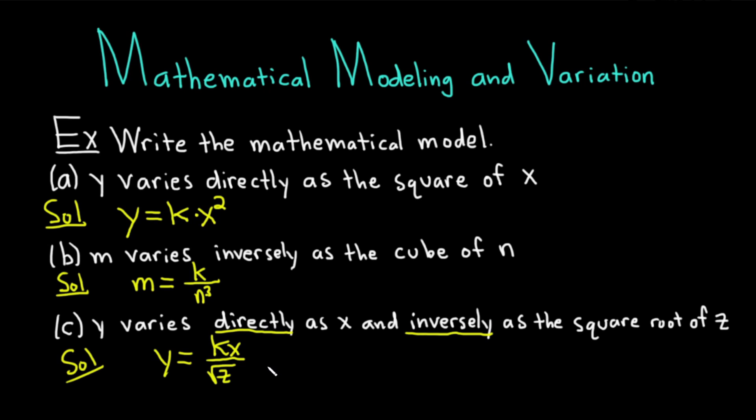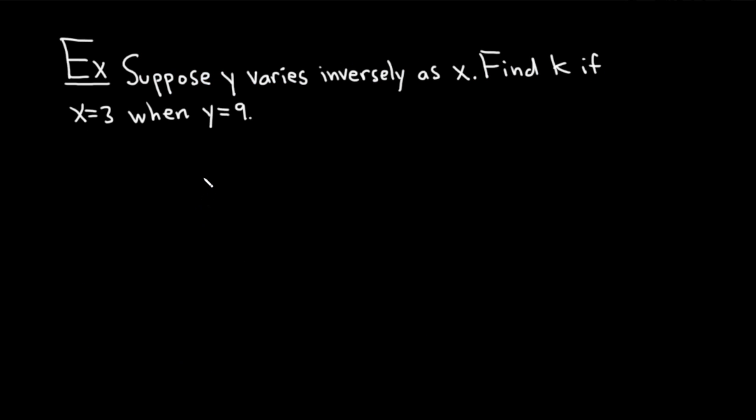Let's do another example where we actually find the value of k. This example says, suppose y varies inversely as x. Find k if x equals 3 when y equals 9. Let's carefully work through this solution. We'll start by writing down our equation using the first sentence. It says y varies inversely as x.